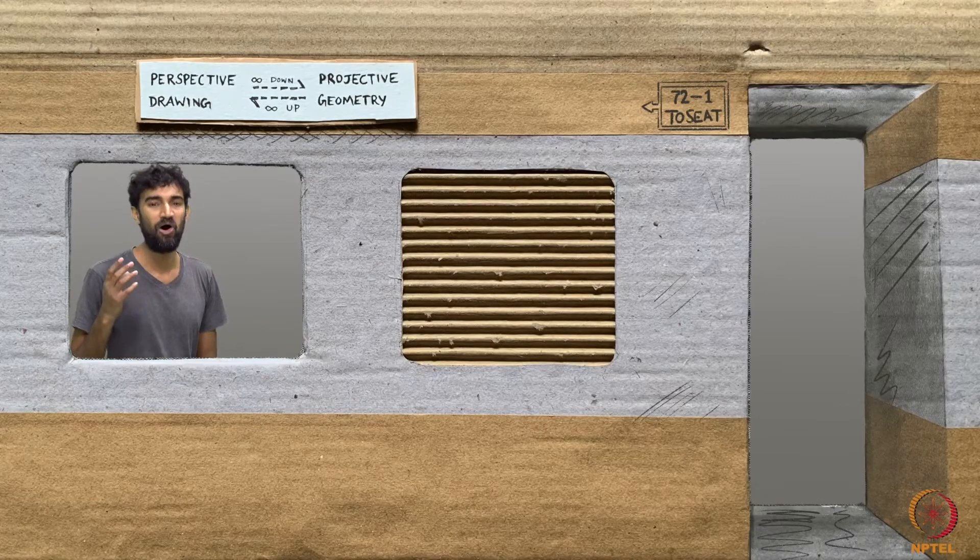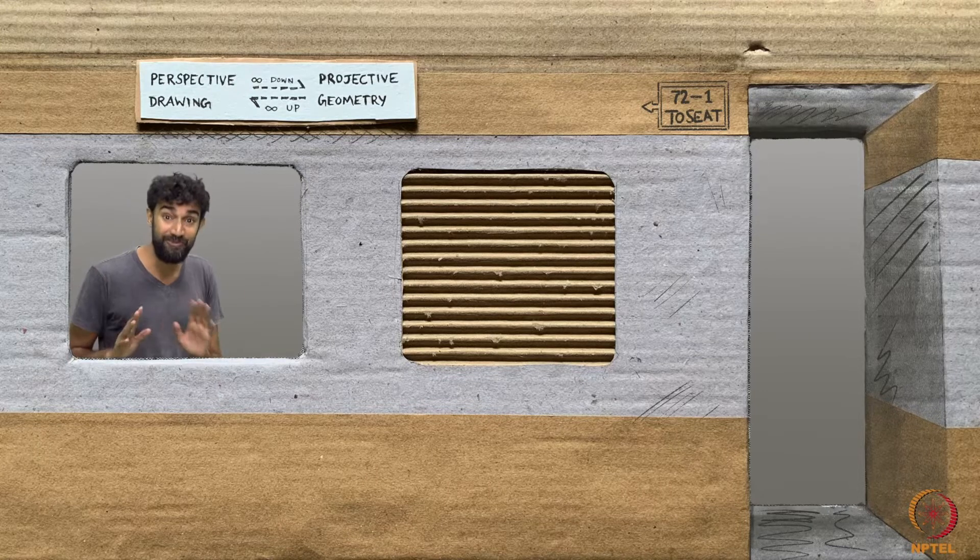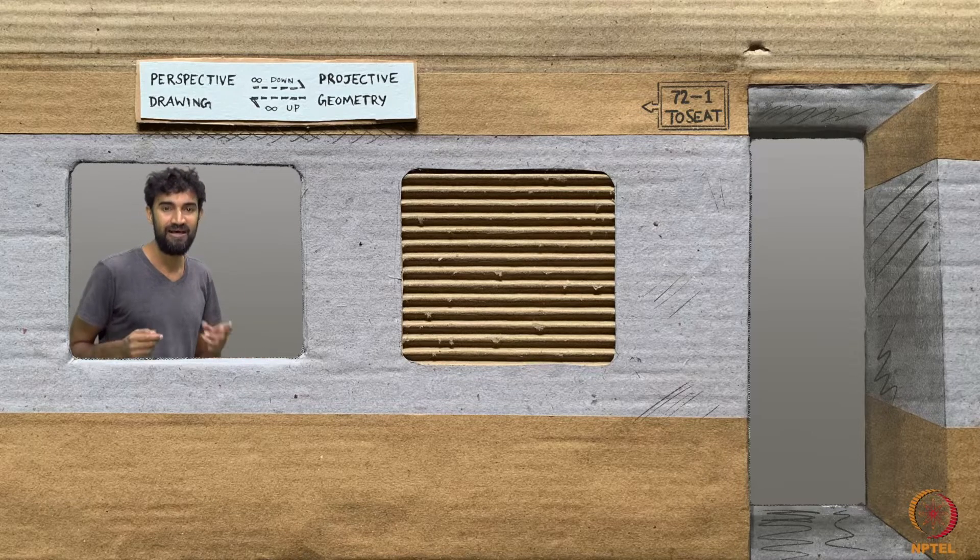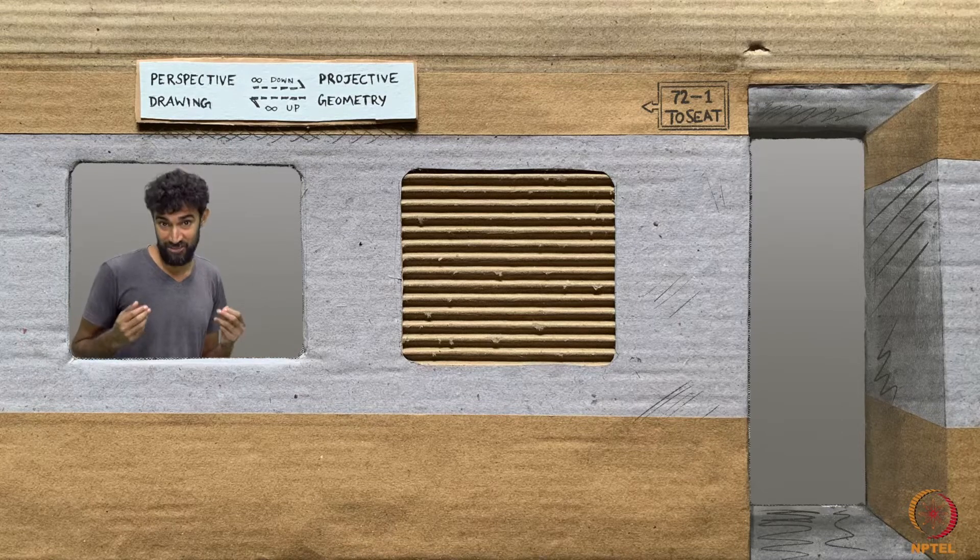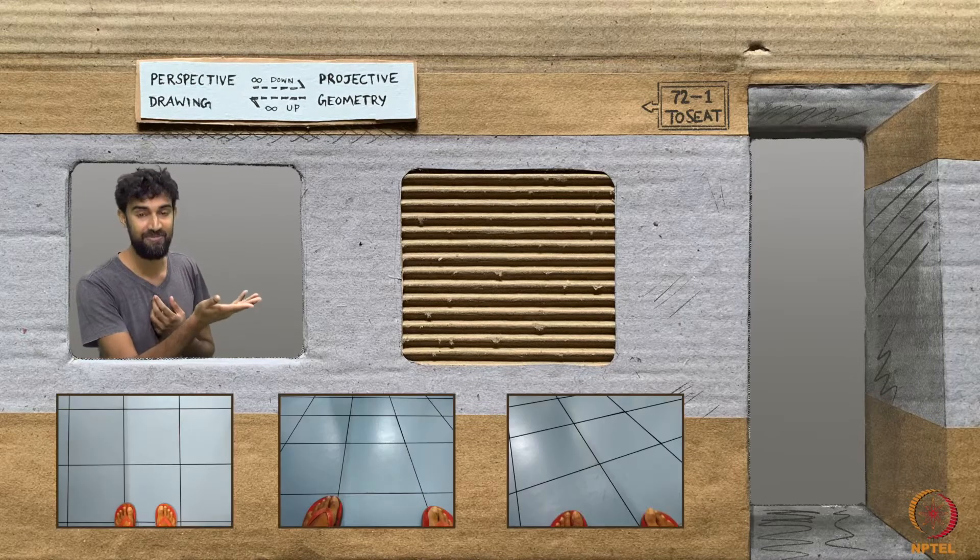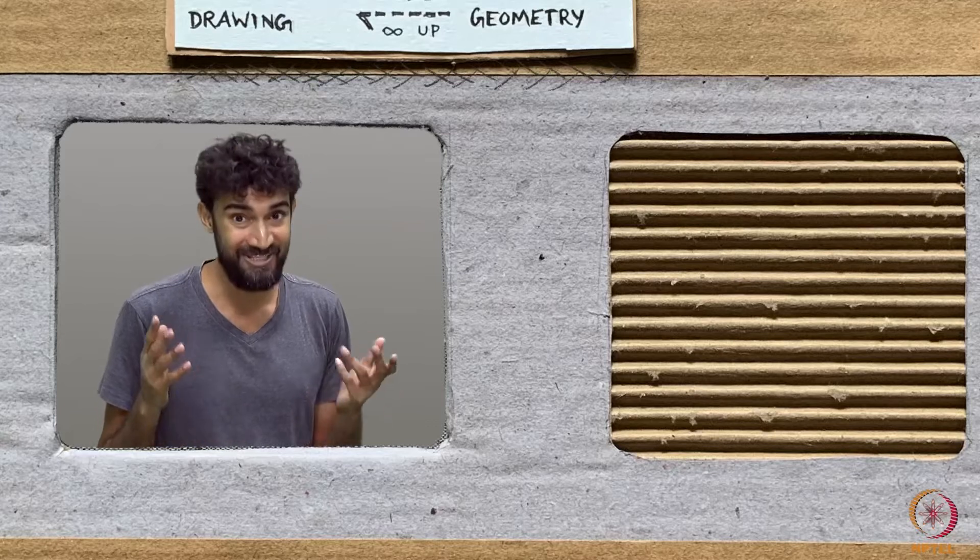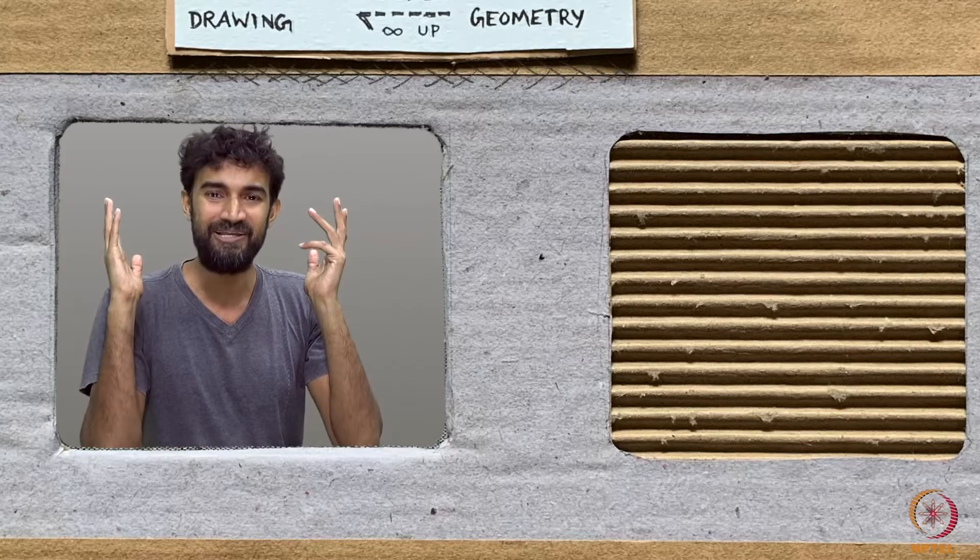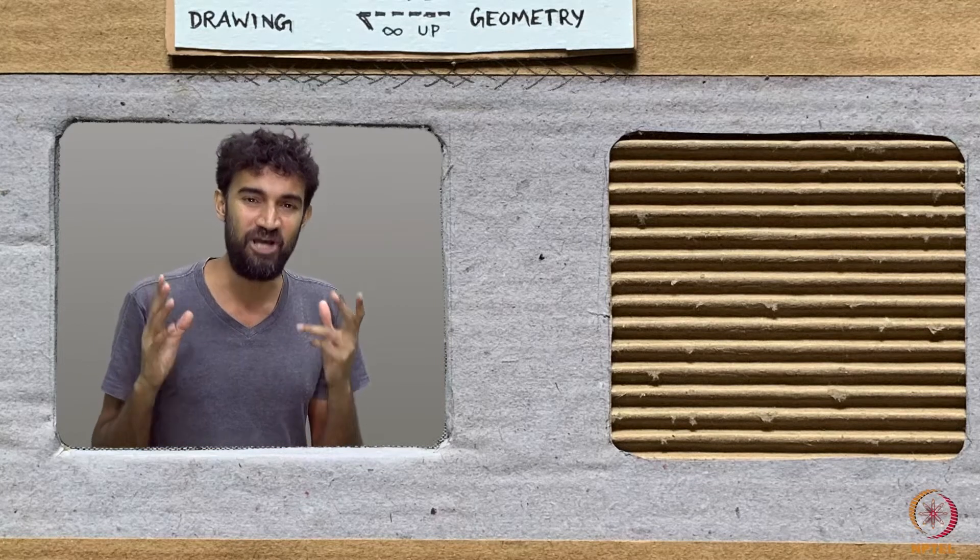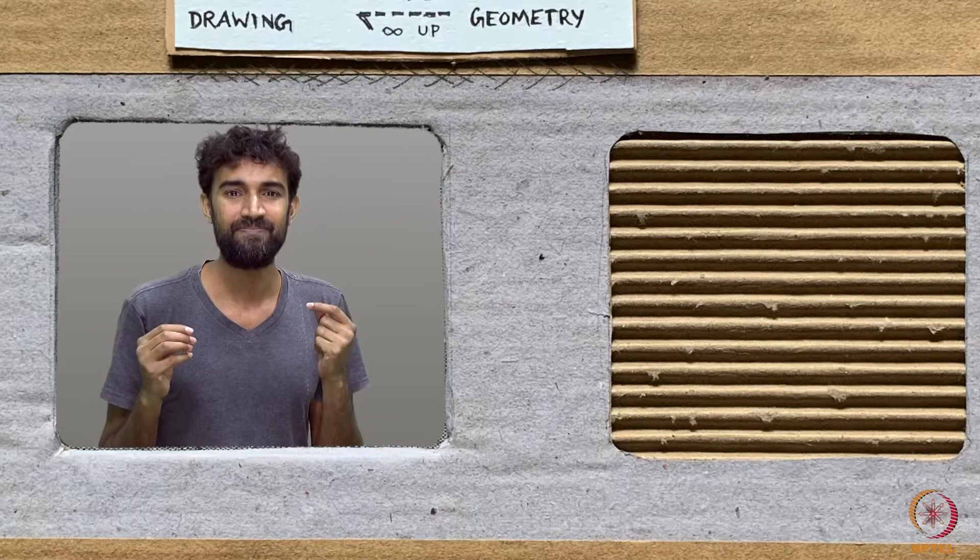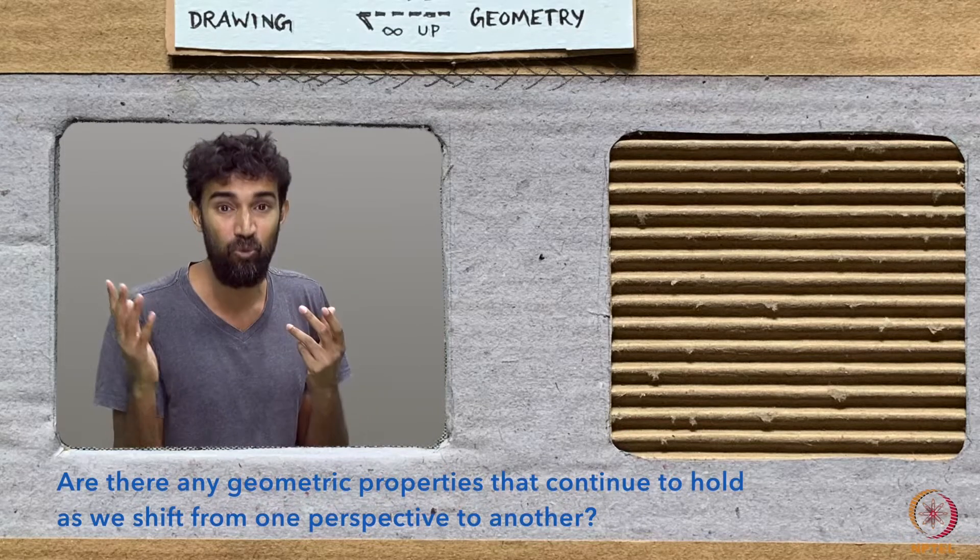We've seen how, on any two-dimensional photograph, lengths, angles, and areas are completely dependent on our viewing perspective. And yet, nevertheless, our brains gather a great deal of geometric information from such images, like the fact that all three of these images represent square, tiled floors. One response is to throw our hands up and say, okay, let's create a geometry in which lengths and angles do not matter. But what does geometry even mean in that case? Are there any geometric properties that continue to hold as we shift from one perspective to another?